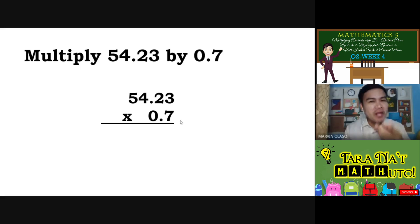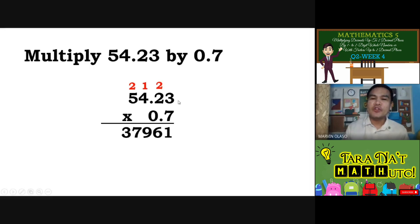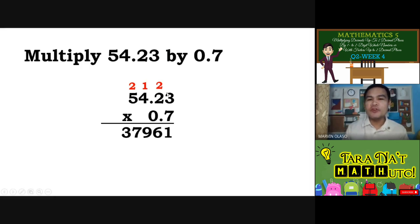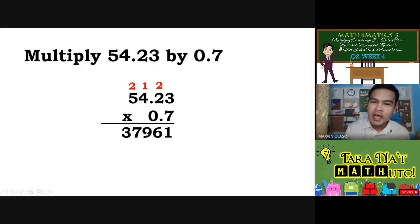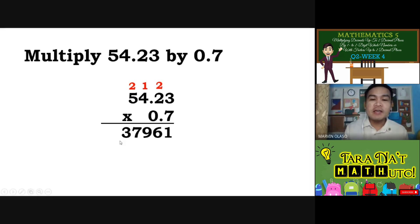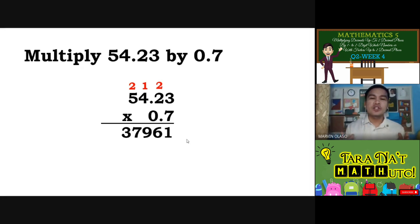Kung piniplay mo na, you are done with your answer. Ano ang sagot mo? 3 times 7 — 21, carry 2. 2 times 7 is 14, plus carry — 16, carry 1. 4 times 7 is 28 plus 1, 29 — 9 carry 2. 5 times 7 is 35 plus 2 — so we have 37,961. Yun ang sagot kapag whole number.